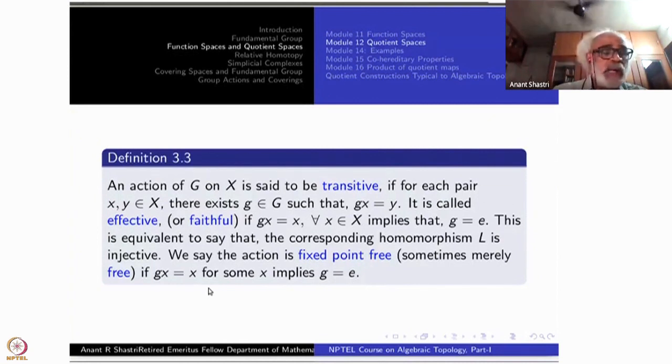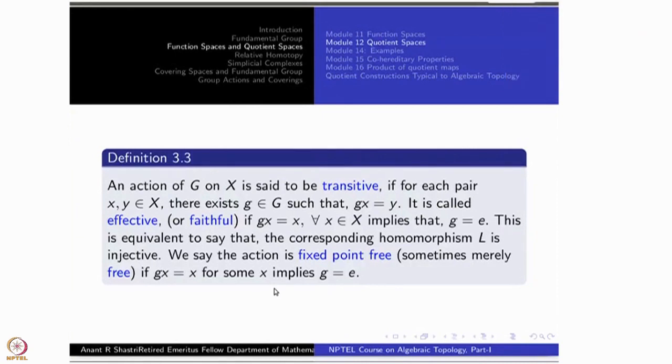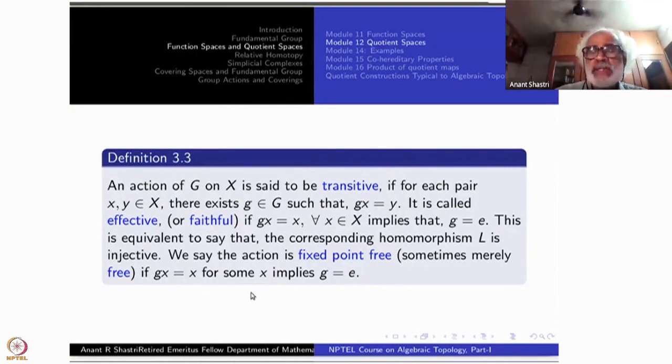He says the action is fixed point free, sometimes merely just free action. Whenever GX is X for some X implies G's identity. This is very strong in the sense that if you have a non-trivial element, then it will not fix any element. All the members are moved. Even if it fixes one X, then it must be identity. Such a thing is called free action.